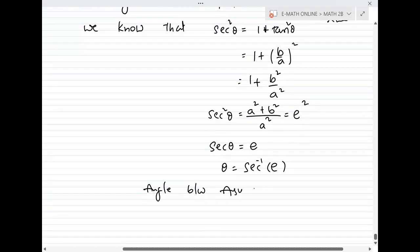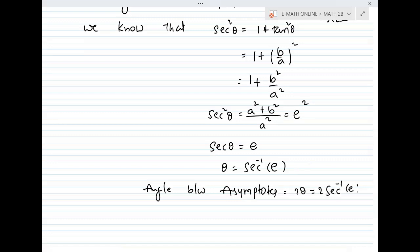Angle between asymptotes equals 2θ equals 2 secant inverse e. That's the answer. Completely done. Thanks for watching, bye-bye.